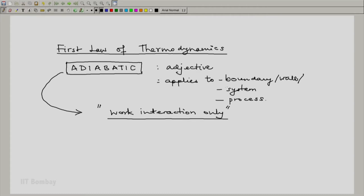It can be applied to a boundary or a wall, in which case we will say that if that boundary allows only work type of interaction, it is an adiabatic boundary or an adiabatic wall.